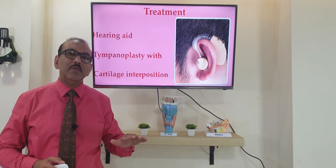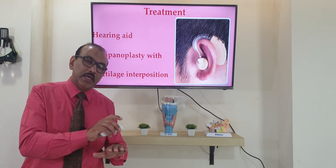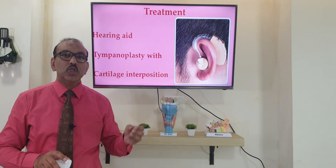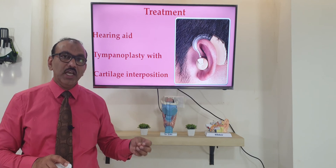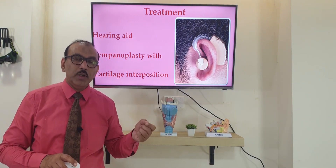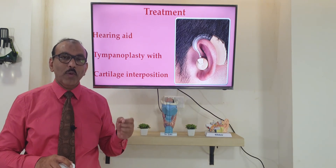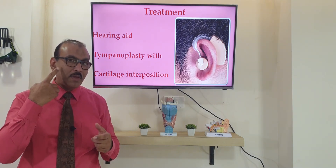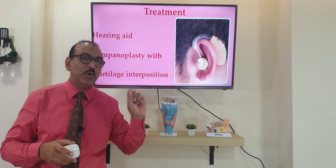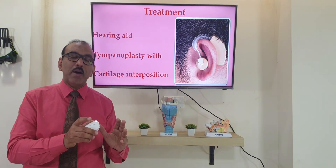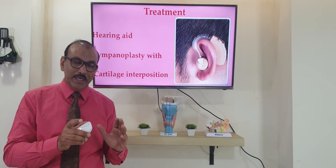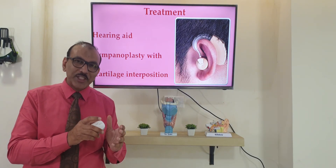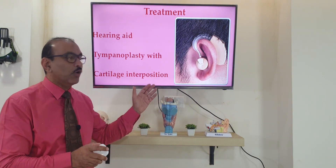Before placing the eardrum graft, we place a cartilage in the middle ear so that the eardrum does not get sucked in again. Before doing this major surgery, if we can perform balloon tuboplasty of the Eustachian tube first, that is better. We put a balloon through the nose into the Eustachian tube, inflate it at 10 bar pressure, and leave it for 2 minutes. We do that first to try to restore the Eustachian tube to as normal a function as possible, and then proceed with the major surgery.